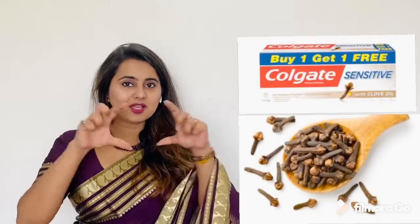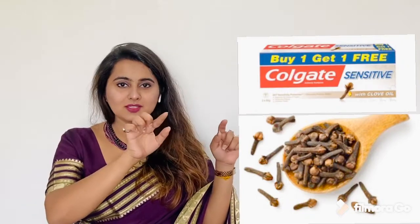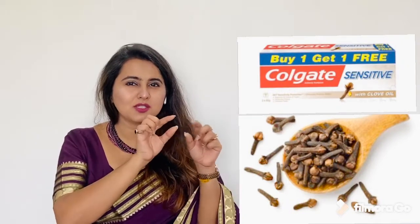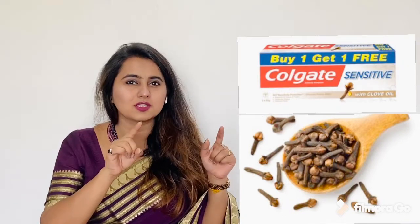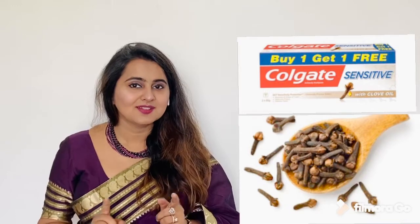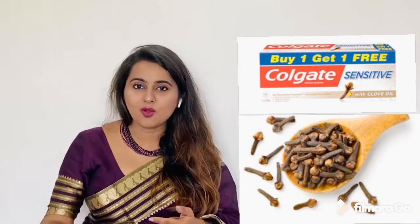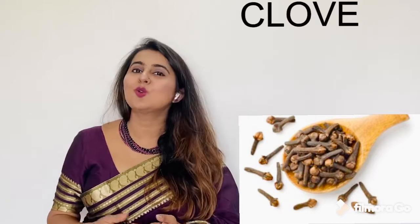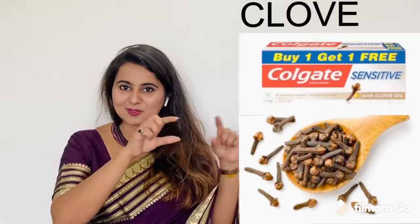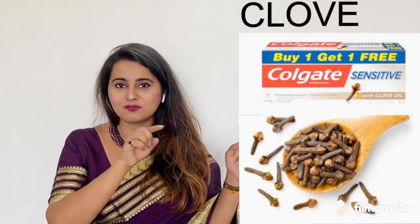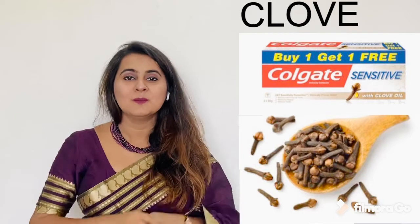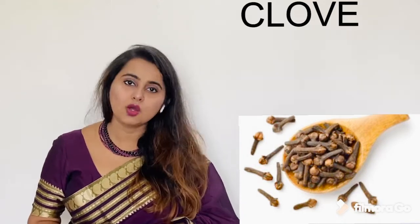The next word is LONG. You may have noticed that Colgate toothpaste mentions LONG on its packaging. What is the English word written there? LONG is called CLOVE in English. You may have seen it written on Colgate — 'with clove.' So, clove is LONG.